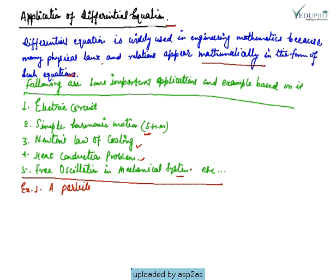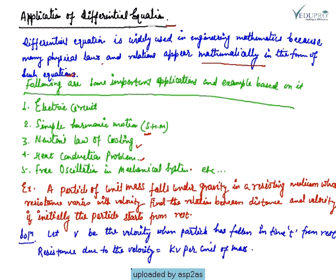So we are taking an example based on these applications. The example is: a particle of unit mass falls under gravity in a resisting medium whose resistance varies with velocity. Find the relation between distance and velocity.